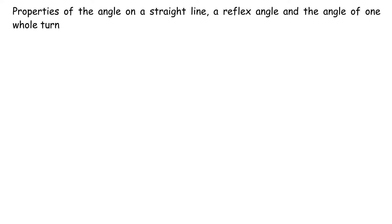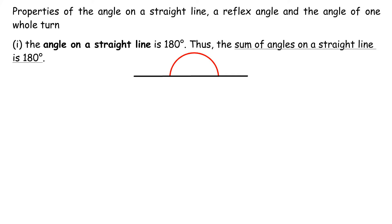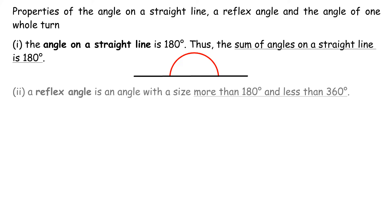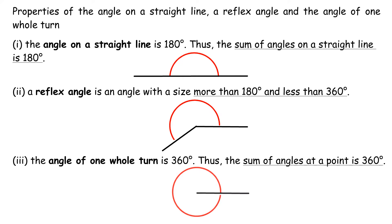Properties of the angle on a straight line, a reflex angle, and the angle of one whole turn. 1. The angle on a straight line is 180 degrees; thus, the sum of angles on a straight line is 180 degrees. 2. A reflex angle is an angle with a size more than 180 degrees and less than 360 degrees. 3. The angle of one whole turn is 360 degrees; thus, the sum of angles at a point is 360 degrees.